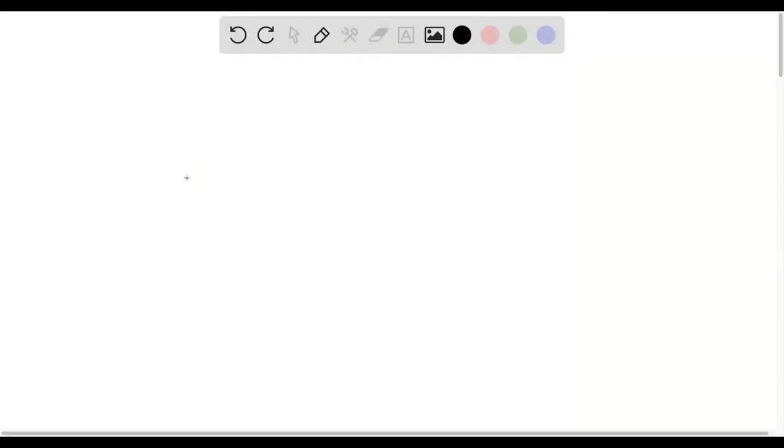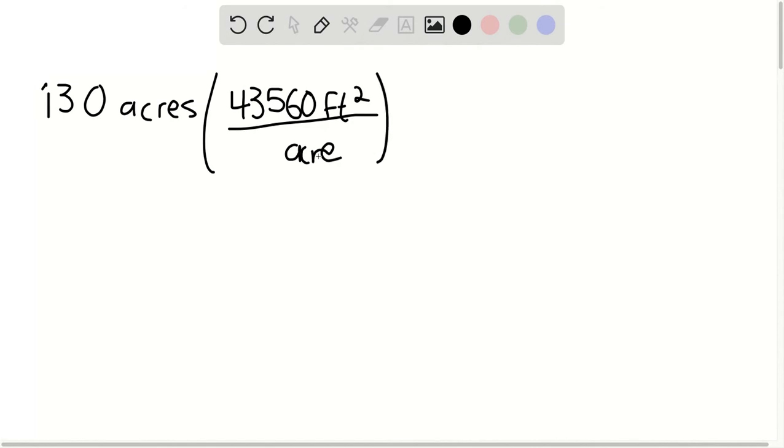We're trying to find the volume of the pyramid. We know that the base area of the pyramid is 13 acres. We're going to multiply this by 43,560 feet squared for every acre, and this equals 566,280 square feet, which is the base area.